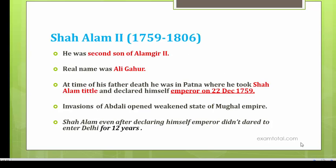At the time of his father's death, Shah Alam II was in Patna. He declared himself emperor on 22nd December 1759.